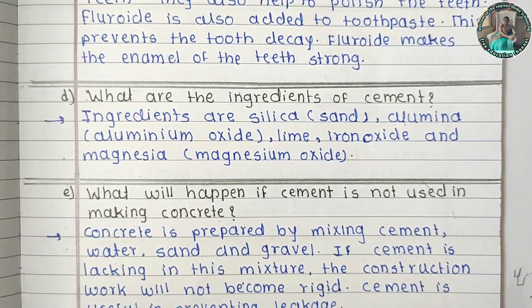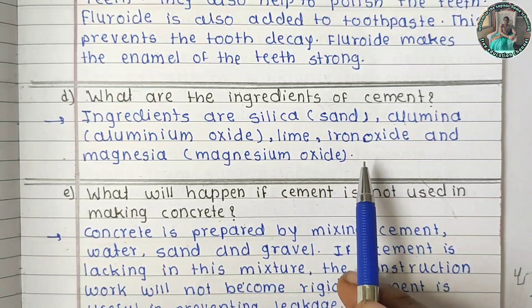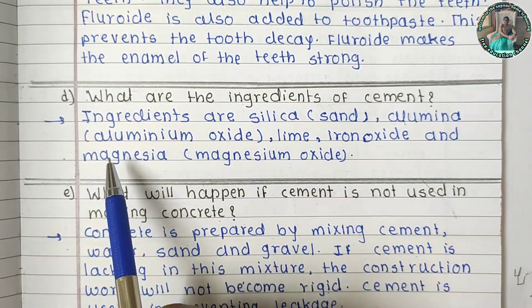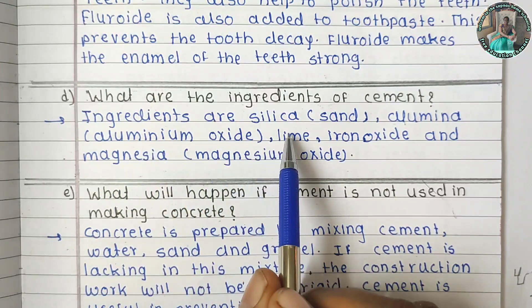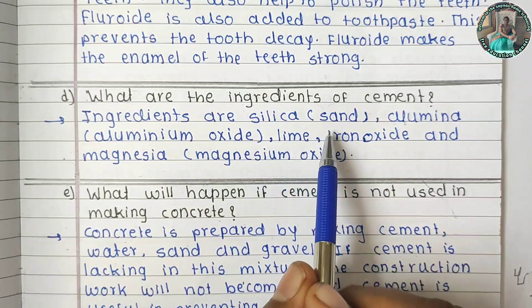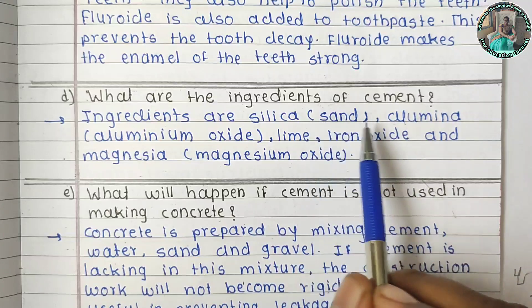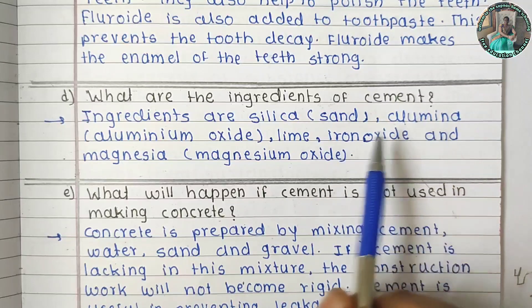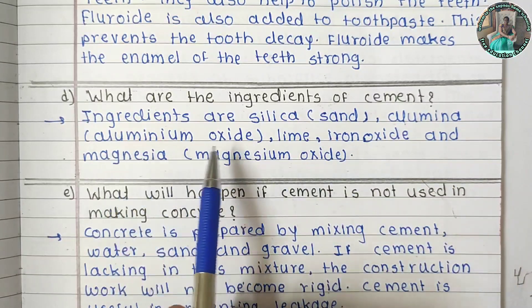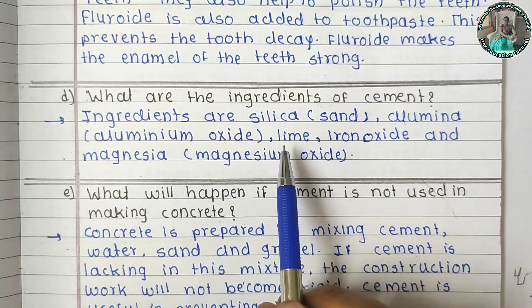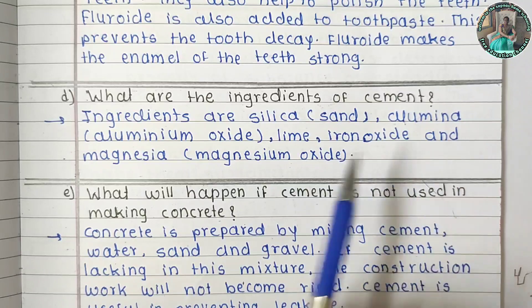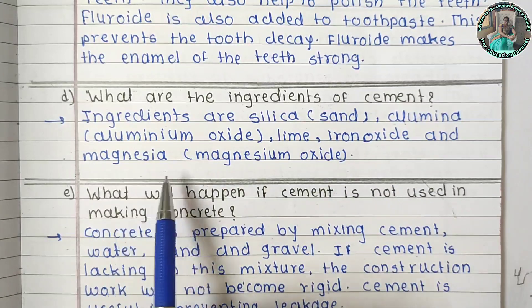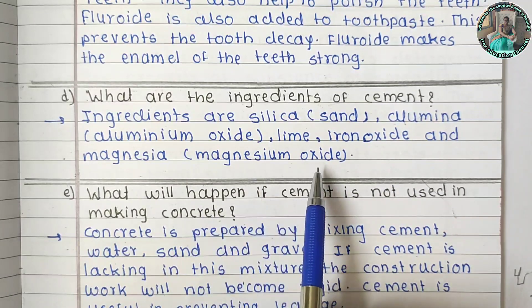What are the ingredients of cement? The ingredients are silica (sand), alumina (aluminium oxide), lime, iron oxide, and magnesium oxide.